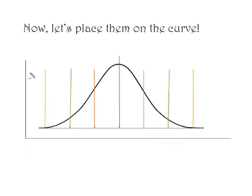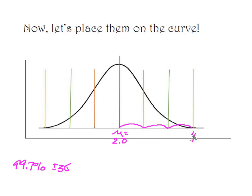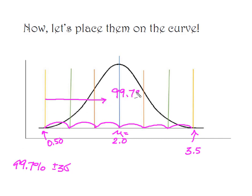Let's go one more standard deviation for the 99.7% interval, which is plus or minus three standard deviations. The mean is dead center. Moving to the right one, two, three standard deviations takes me up to 3.5 ounces. Moving to the left one, two, three standard deviations brings me down to 0.50. So 99.7% of the time our hummingbirds are going to consume between 0.5 and 3.5 ounces.